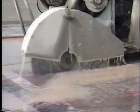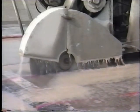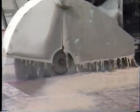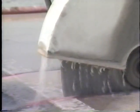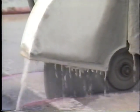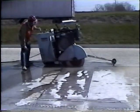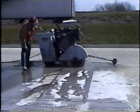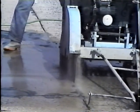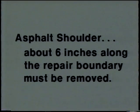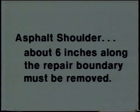This saw produces cuts with ragged edges that promote excessive spalling. Therefore, the saw cuts must be made at least 18 inches away from the repair boundaries, and they must not be allowed to penetrate more than a half inch into the base. Frequently, the repair boundaries are cut at night after the pavement is cooled — this helps keep the saw from binding. The longitudinal joint between lanes and at the concrete shoulder should also be cut full depth, completely severing all existing tie bars. If there's an asphalt shoulder, about six inches of it along the repair boundary must be removed to prevent damage during concrete removal and to provide space for the outside edge form.